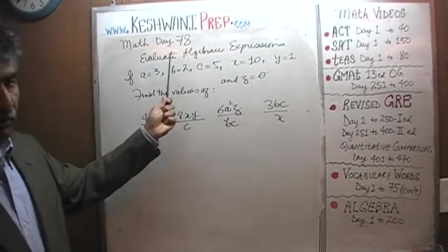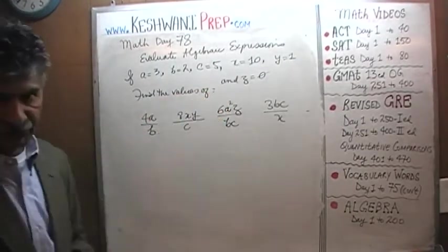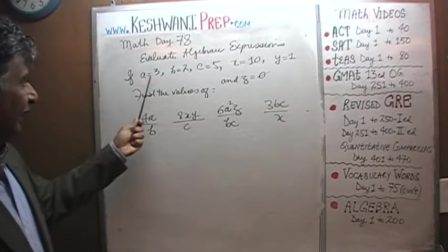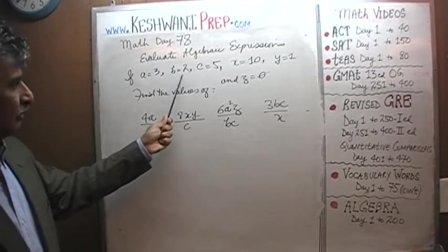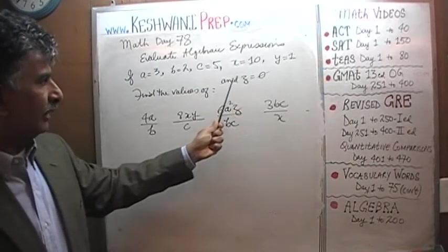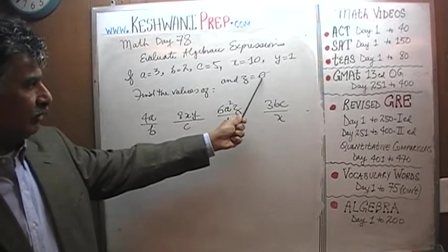Today we will evaluate some algebraic expressions. Here's what's given to us. We are told that if A equals 3, B equals 2, C equals 5, X equals 10, Y equals 1, and finally Z equals 0.